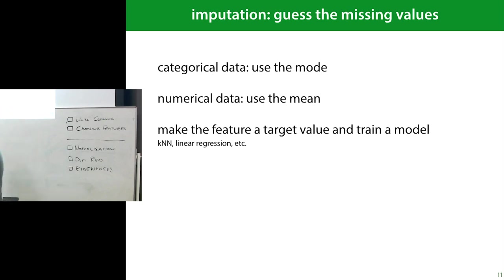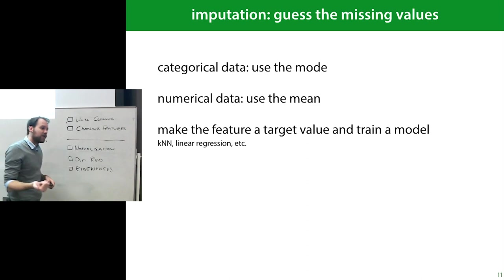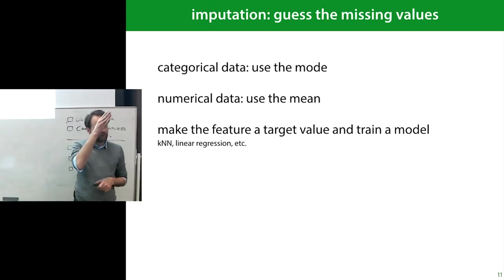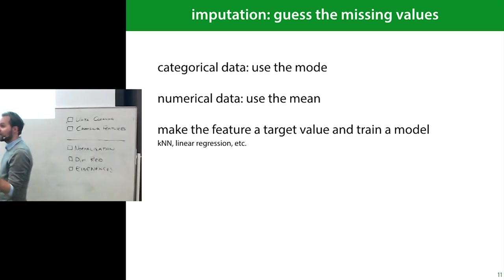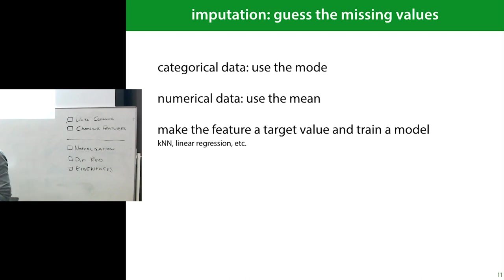If you have more missing data, simple imputation skews your distribution towards the mean or mode too much, so you need to do something more clever. One approach: ignore the target column, make the column with missing values the new target column, and build a classifier or regression model to fill in those missing values depending on whether it's categorical or numeric data.